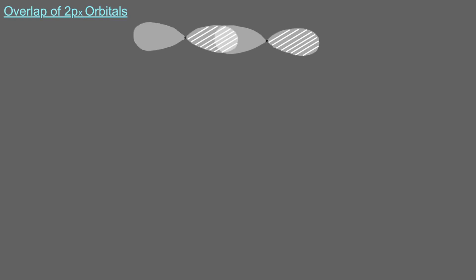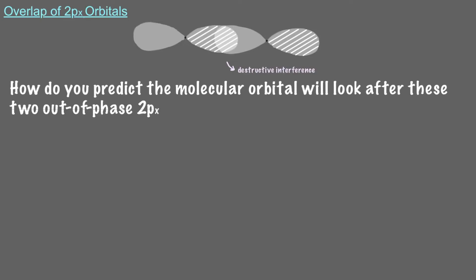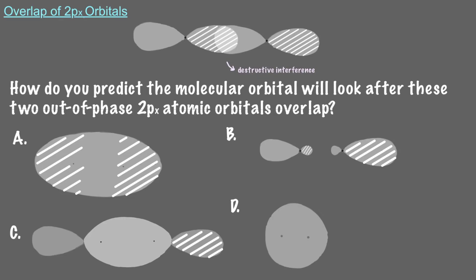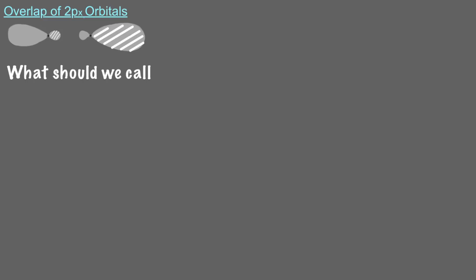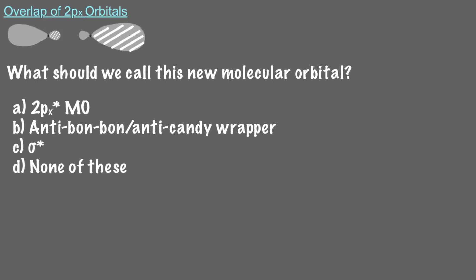When 2px orbitals overlap out-of-phase, they interfere destructively. Similarly to 1s atomic orbitals, when the two 2px orbitals overlap out-of-phase, the destructive interference results in a nodal plane. When these two lobes overlap out-of-phase, the wave density at the place of overlap shrinks, and a nodal plane forms. This molecular orbital is still a sigma orbital because of its cylindrical symmetry, but the nodal plane between the nuclei means it's anti-bonding, so we add a star. The molecular orbital formed when two out-of-phase 2px orbitals overlap is called sigma star 2p.